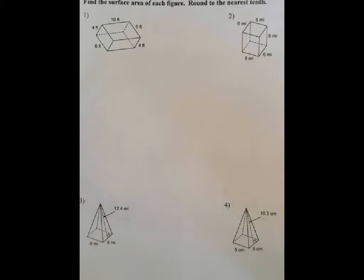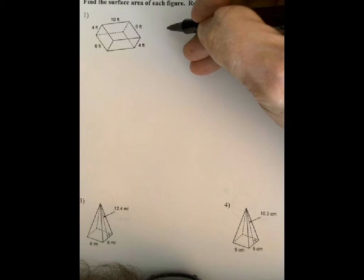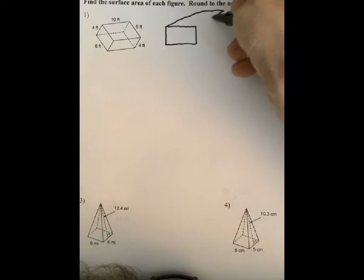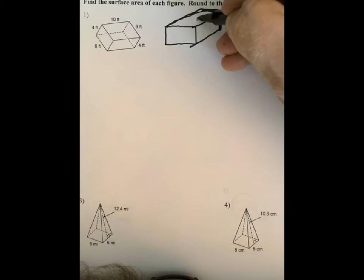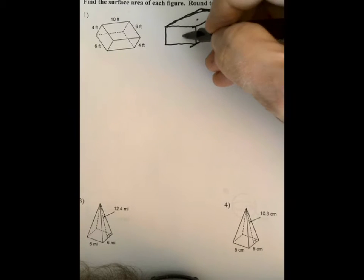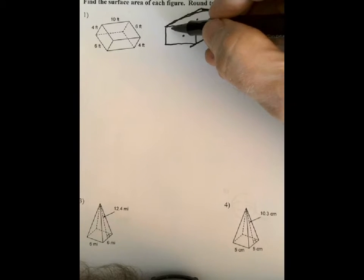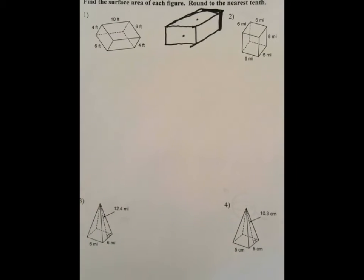First off, remember that the way we're going to figure out the surface area for a prism like this is we're going to find the area of the top here and then double it to get the area of the bottom, the area of the front and then double it to get the back, and the area of the side and then double it to get the area of the other side, then add all of that together to get the total outside area.